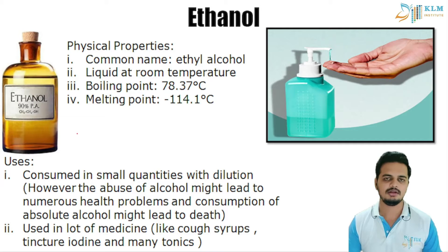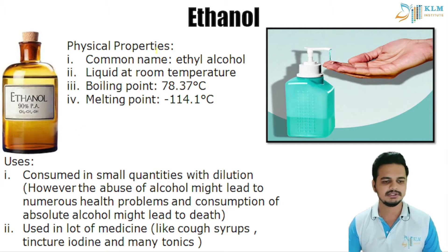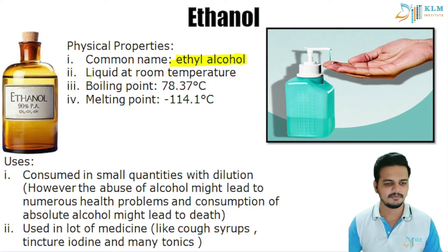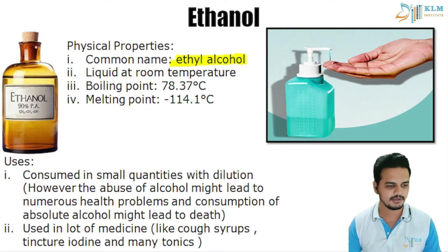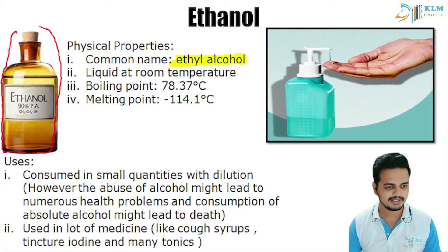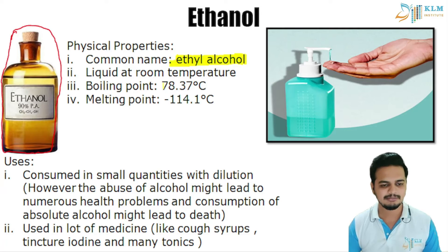Ethanol is the first compound we are going to study. Let's look at its physical properties. It is commonly known as ethyl alcohol. It is an alcohol containing two carbon atoms, and it is a liquid at room temperature. In labs, we get ethanol in a brown bottle.